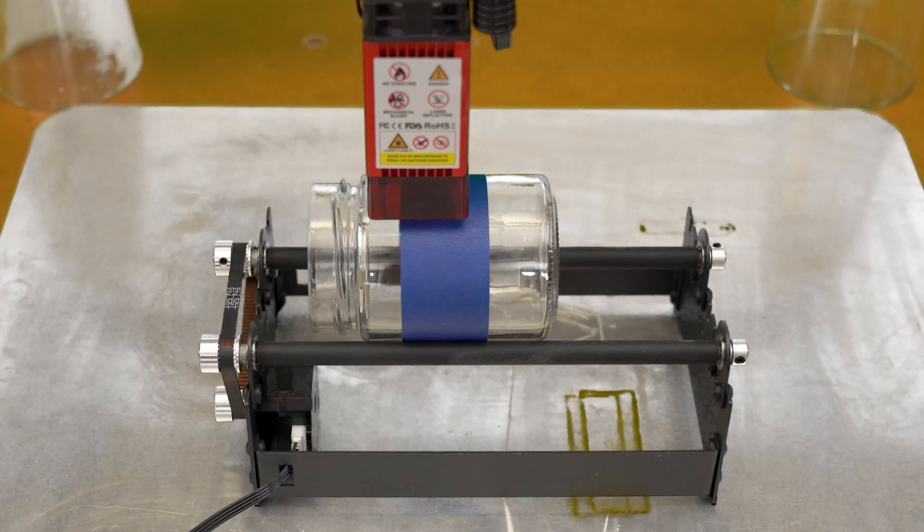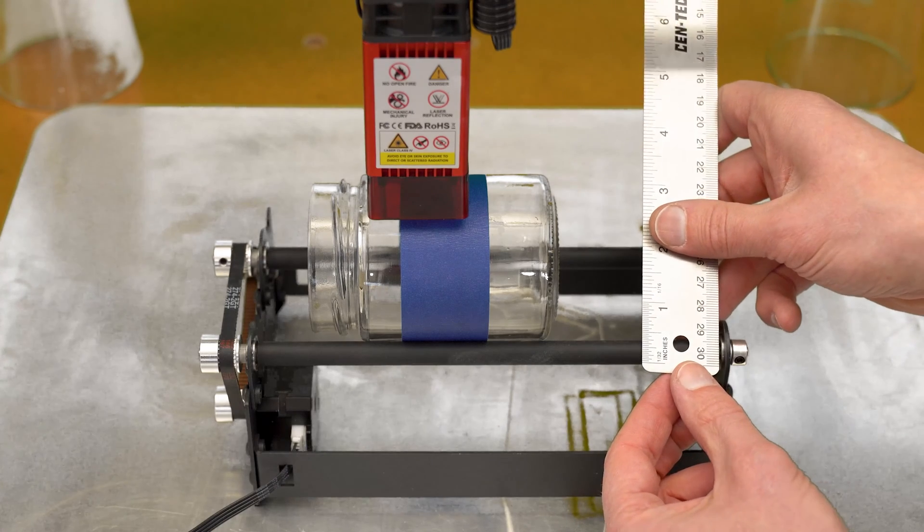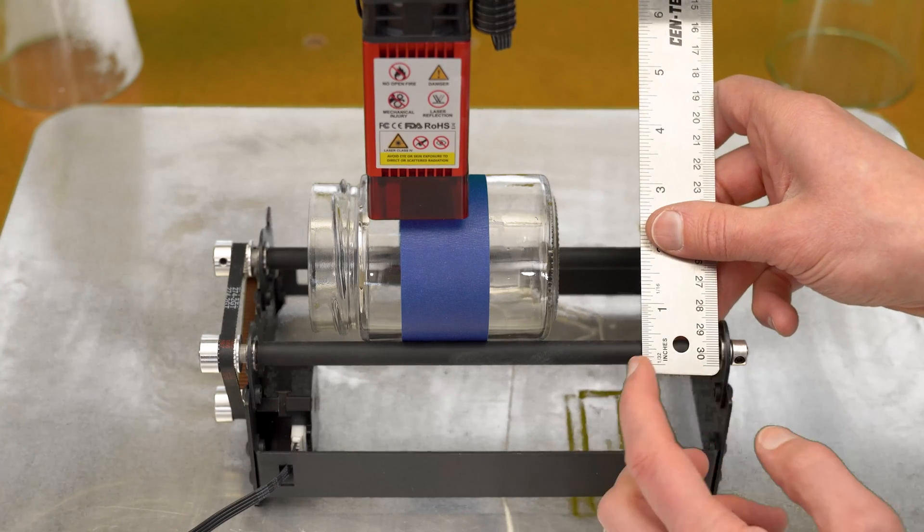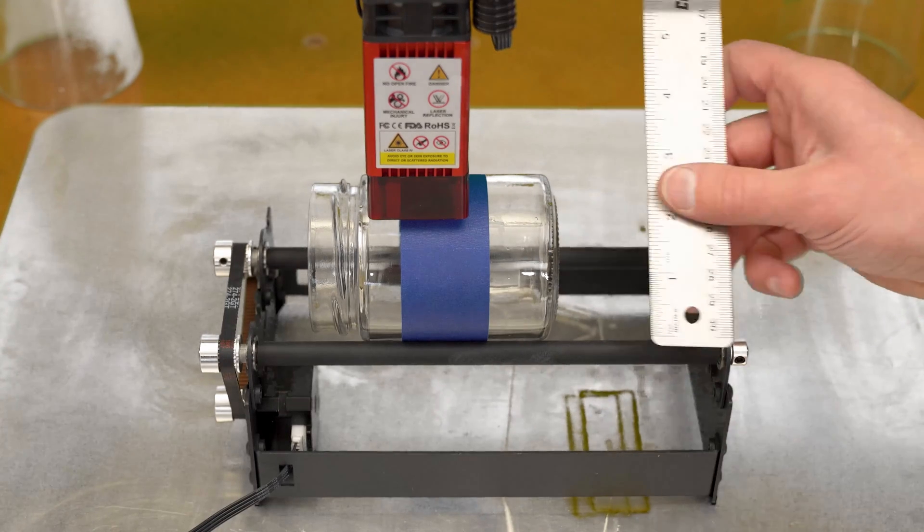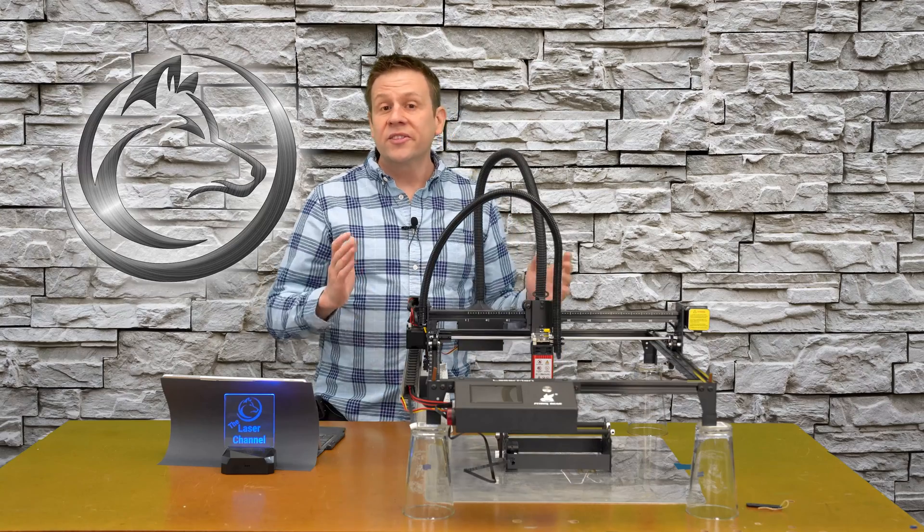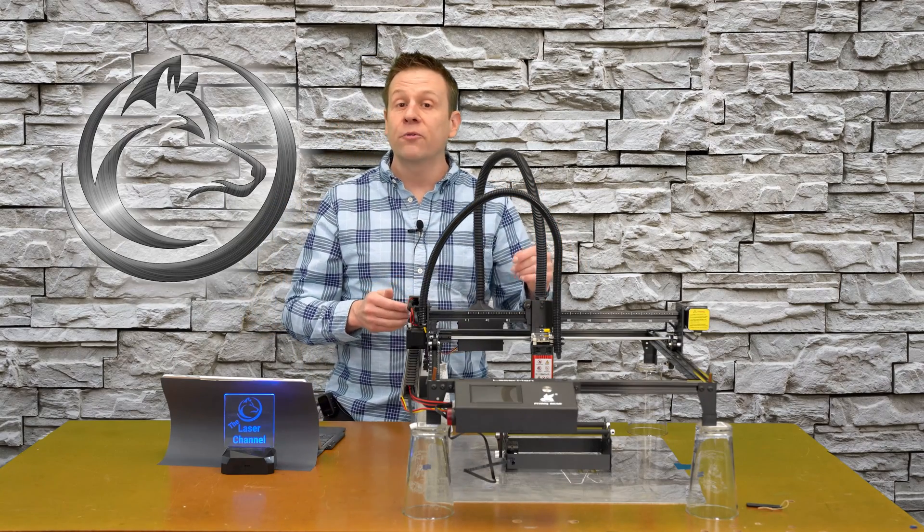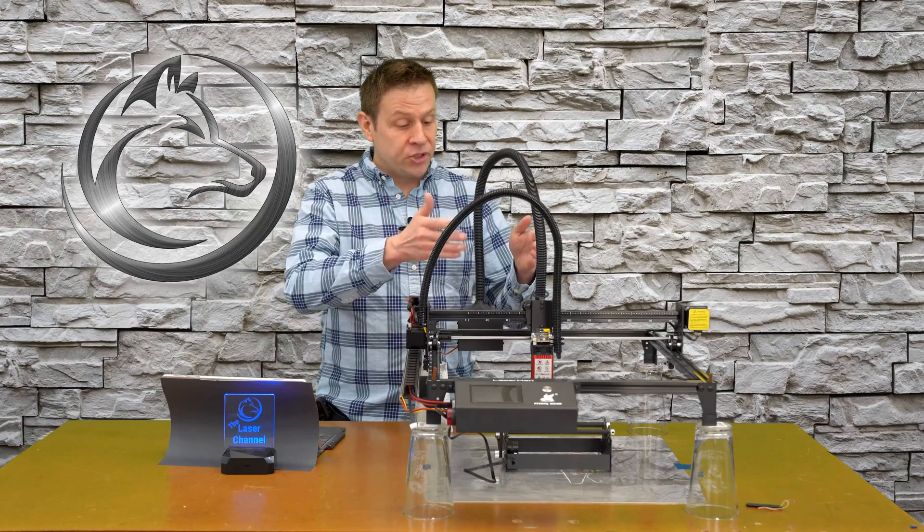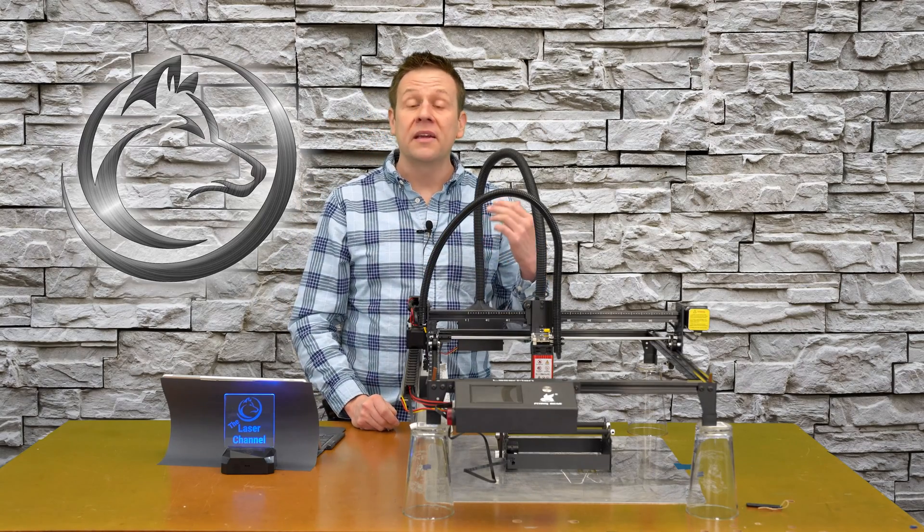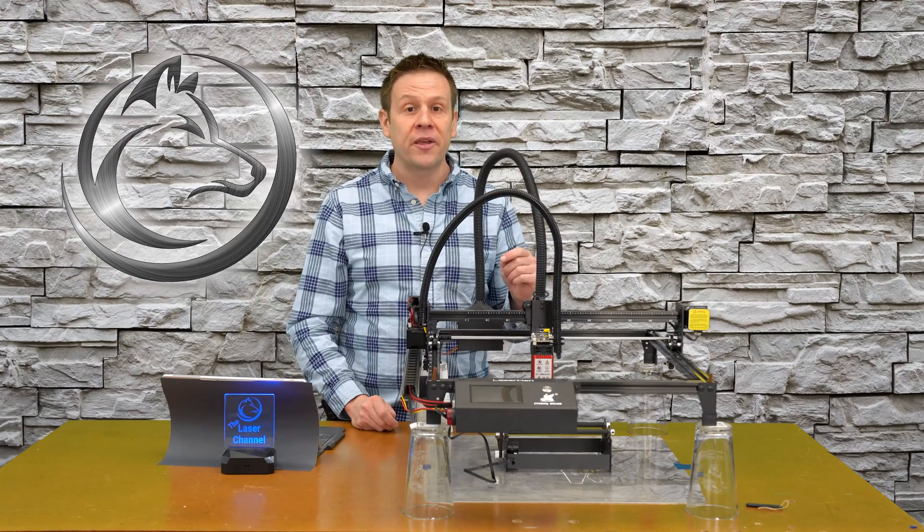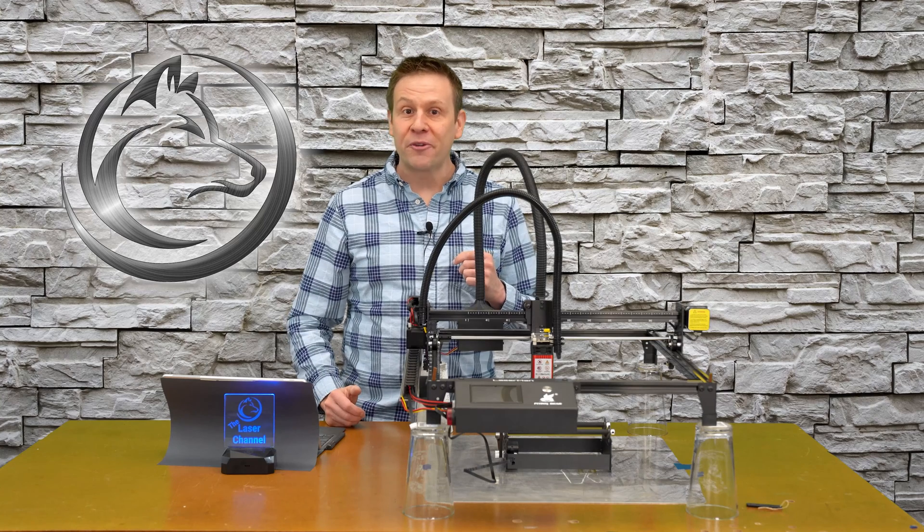I almost forgot to measure the diameter of this roller right here. Either one, they should be the same. I'm going to take this measurement and I want to record this and now we're ready to go into Lightburn. This completes all of the setup for setting up the rotary attachment, aligning it to the frame of the machine, and making sure that I have the focus set and, of course, recording the diameter of our test jar. I'm now ready to power on the machine and connect to Lightburn software.